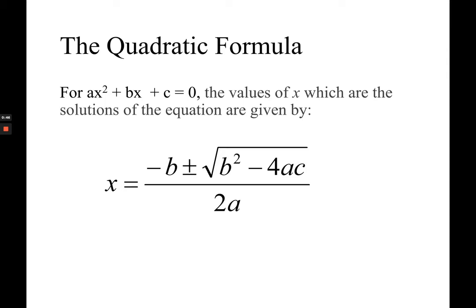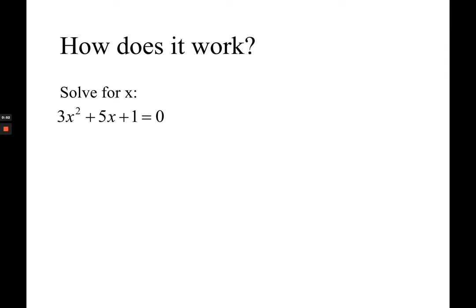How do you use your formula? Let's have an example. Let's say you have 3x² + 5x + 1 = 0. Your given is already in the standard form, so all you need to do is identify your a, b, and c. Your a is actually 3, your b is 5, c is 1.